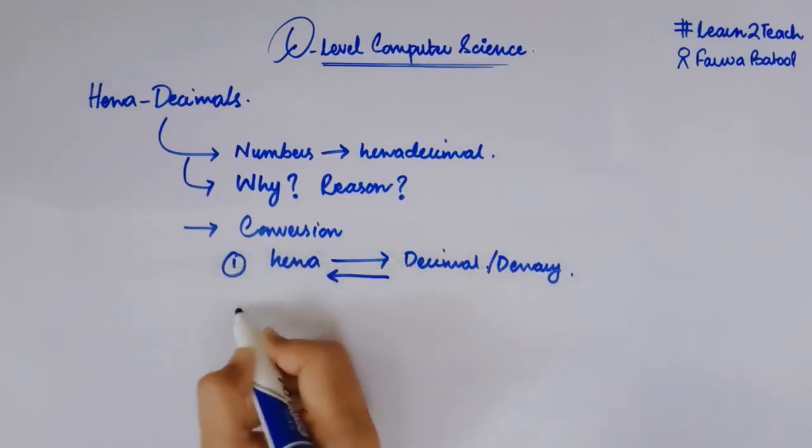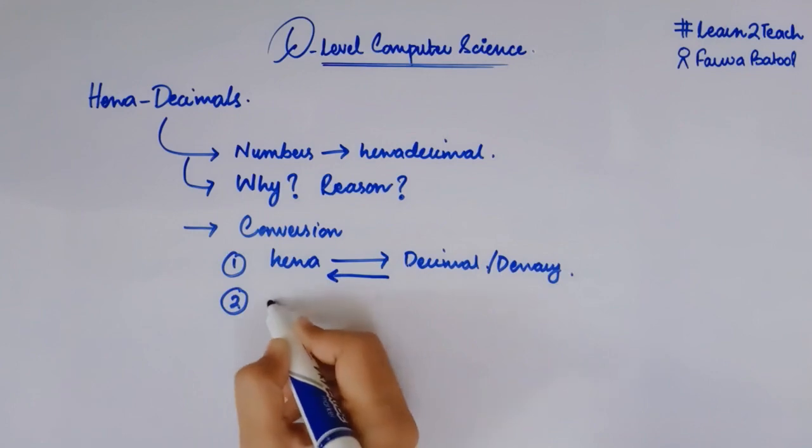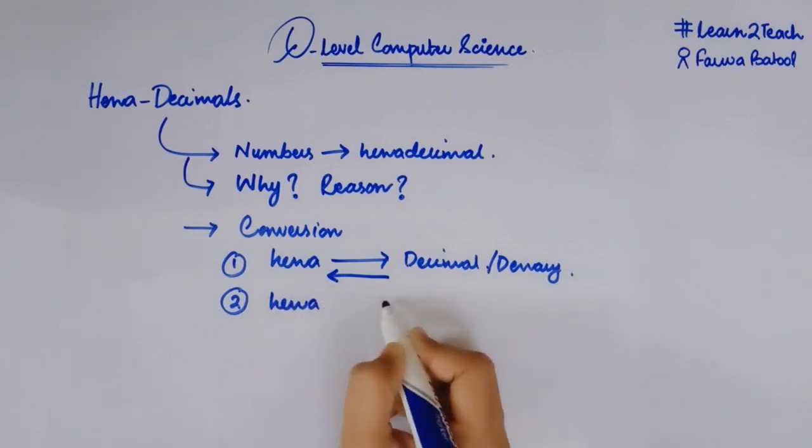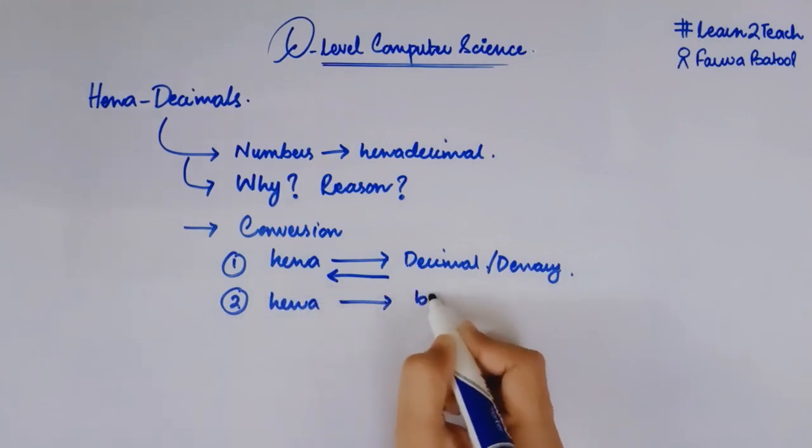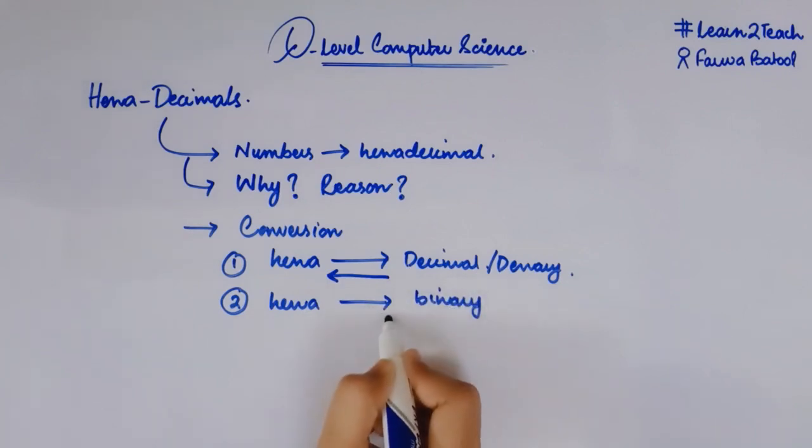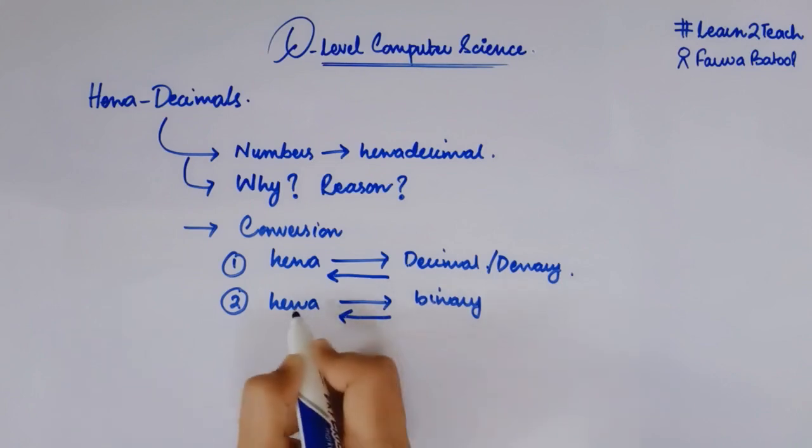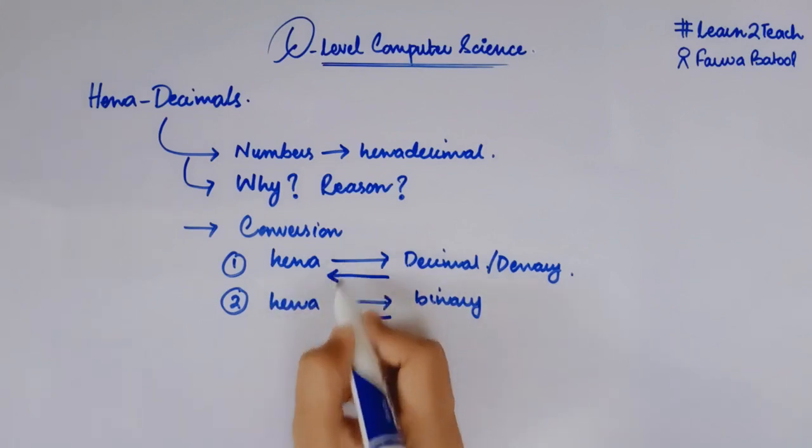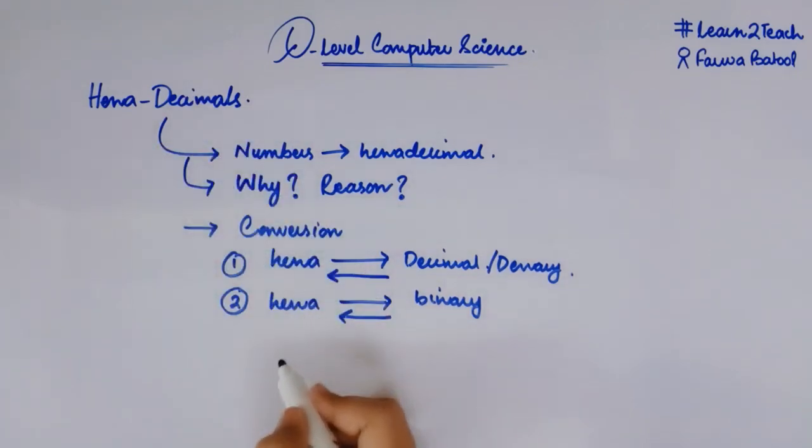This is the first conversion. The second conversion would be how we can convert a hexadecimal number into a binary number in the form of zeros and ones, and how a binary number can be converted into hexadecimal. These are the two kinds of conversions we will see in this hexadecimal topic.